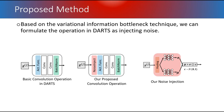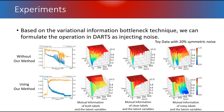In our experiments, we show that without our method, the mutual information for both clean and noisy labels is high — DARTS without our method yields high mutual information between clean labels and noisy labels alike. But with our method, we can separate clean labels from noisy labels: mutual information with respect to clean labels remains high, while mutual information with respect to noisy labels is kept low.